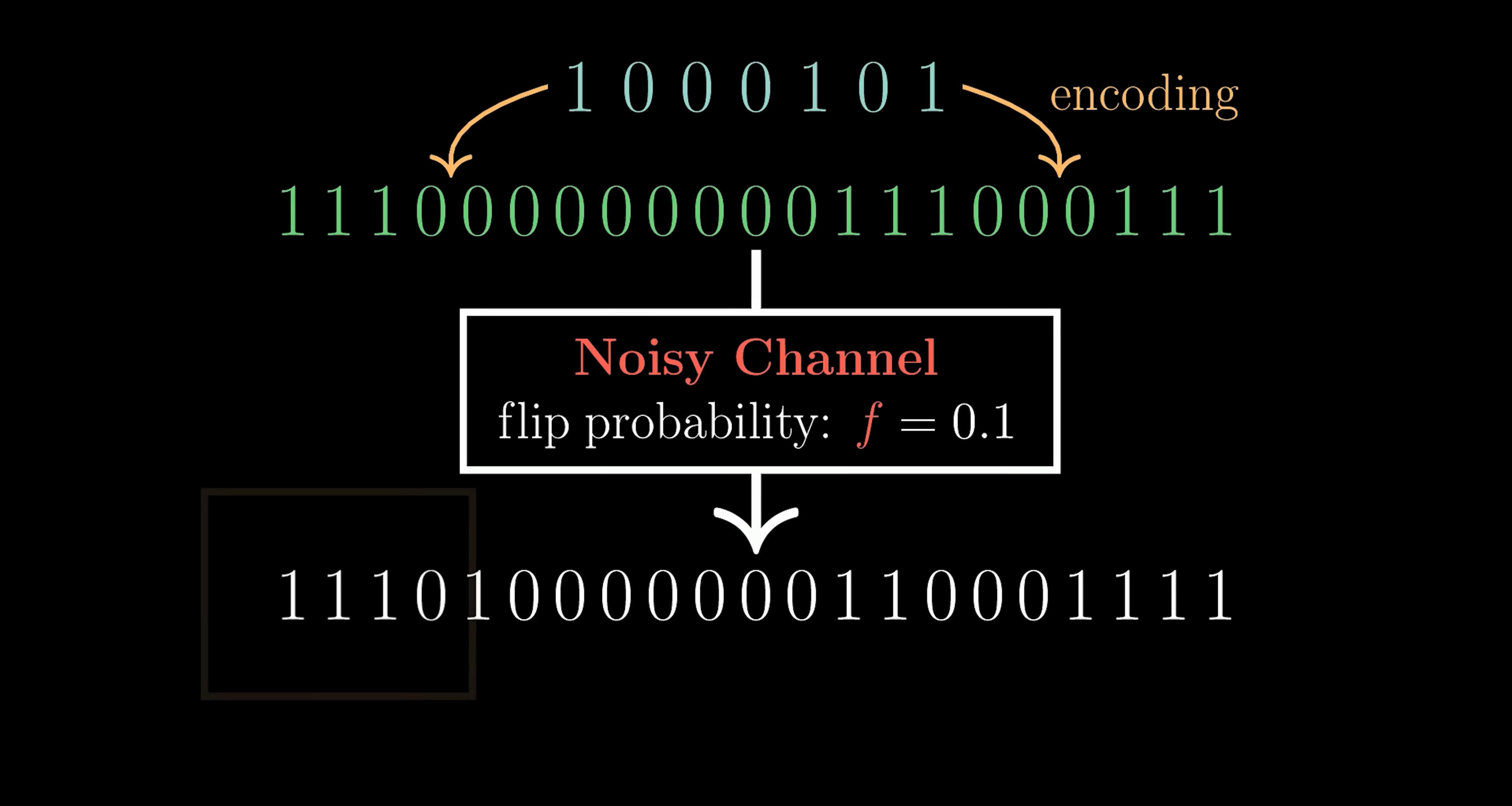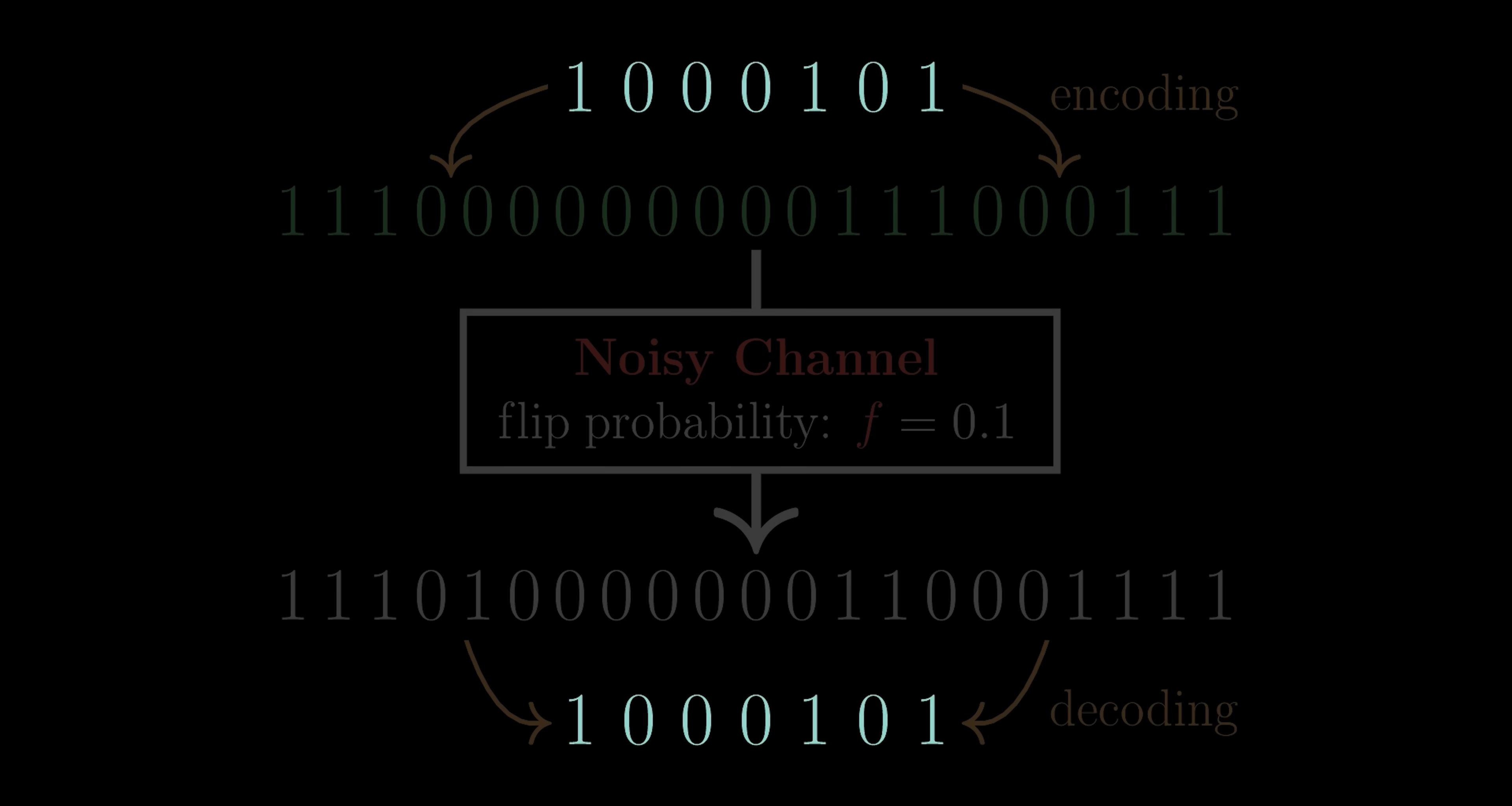So the first three bits are all ones, so that's interpreted as a one. The second chunk has two zeros, so that's read as a zero. And this continues. Now if we compare the original and decoded messages, we see we've made no errors.